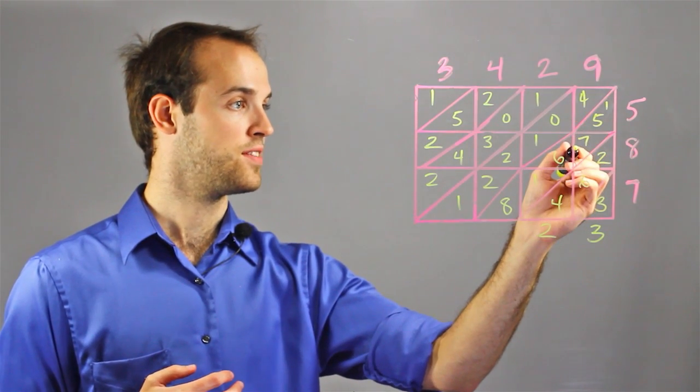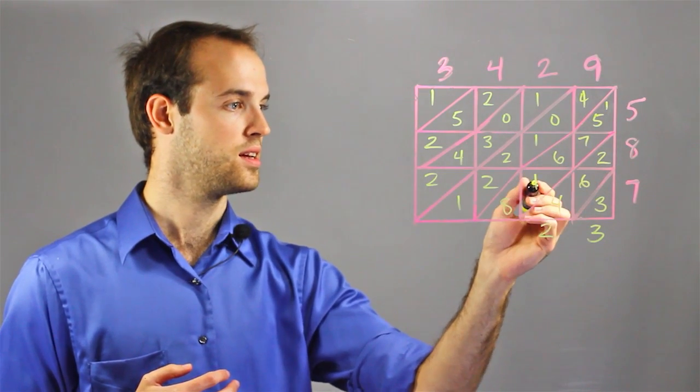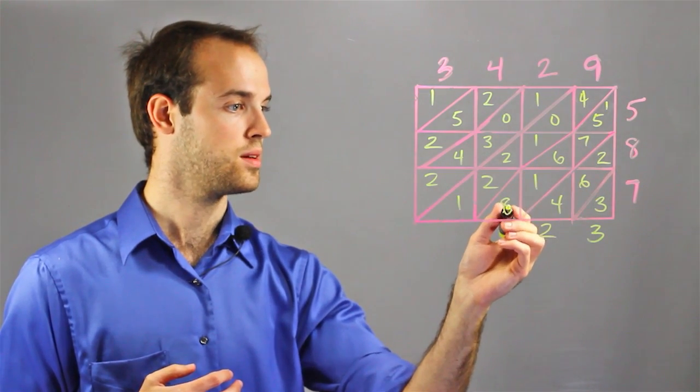1 plus 5 is 6, plus 7 is 20, or no, plus 7 is 13, plus 6 is 19, plus 1 is 20, plus 8 is 28.